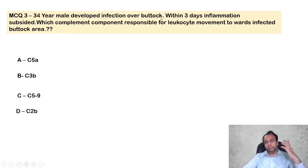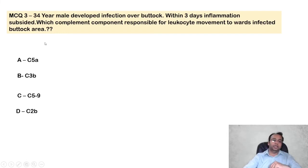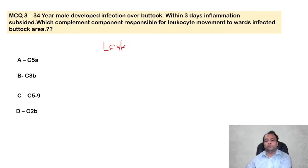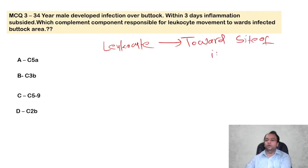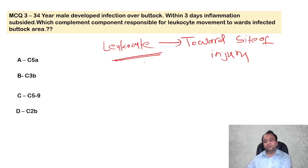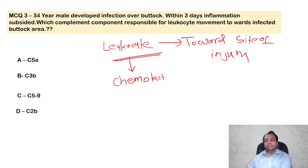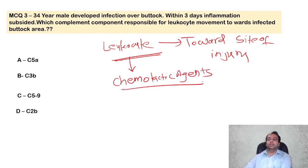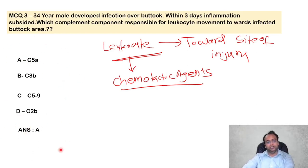MCQ 3: A 34-year-old male developed infection over the buttock and within three days, inflammation subsided. Which complement component is responsible for leukocyte movement toward the infected area? Options: C5A, C3B, C5D, or C2B. Leukocyte chemotaxis is mediated by chemotactic agents. C5A is one of the chemoattractant substances leading to chemotaxis. The answer is C5A.